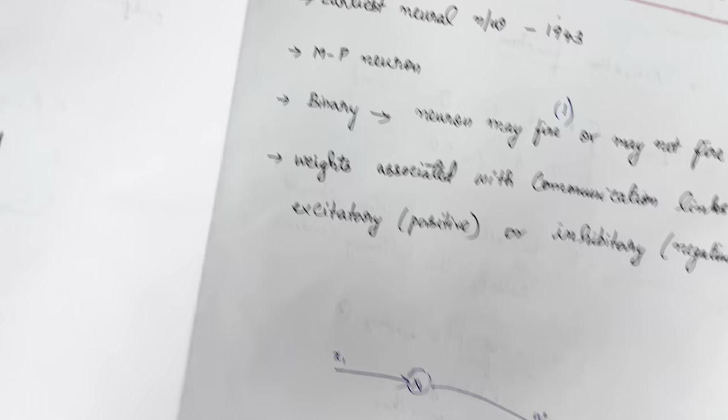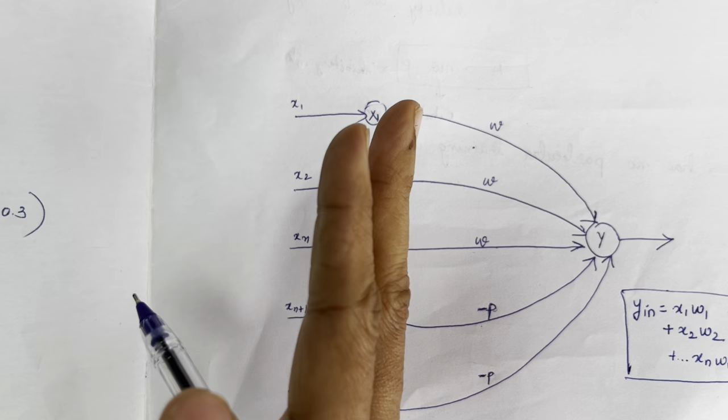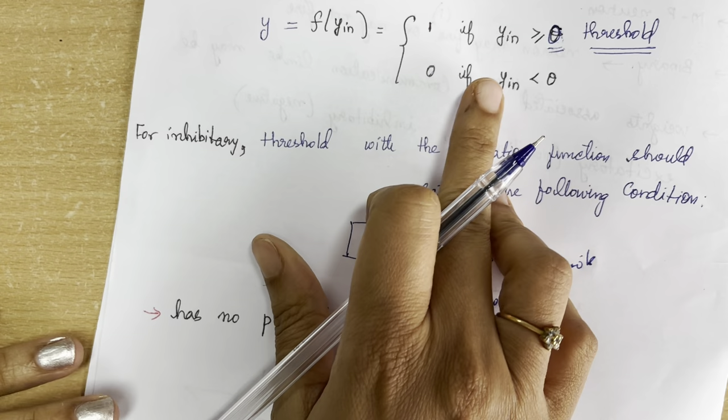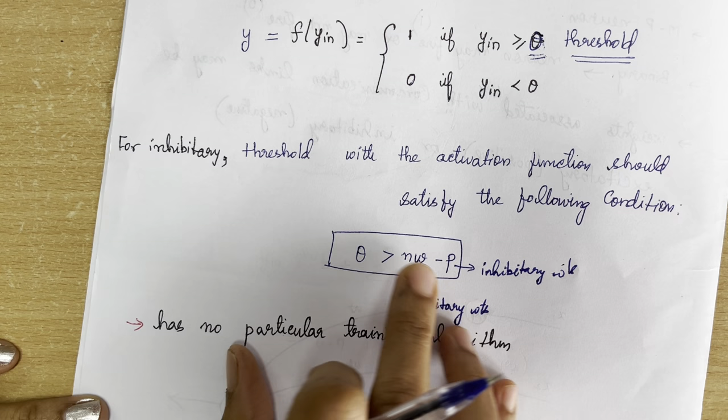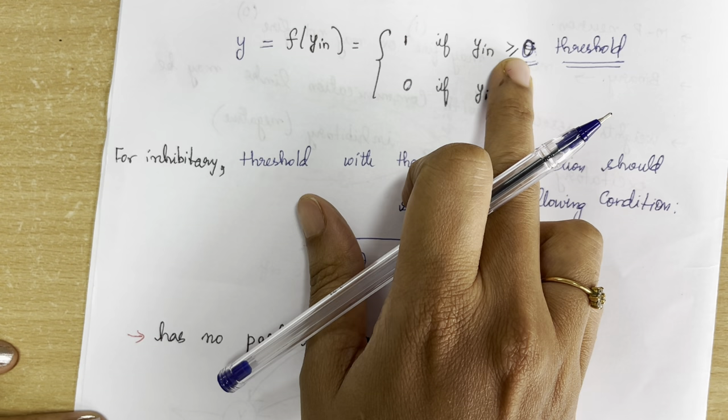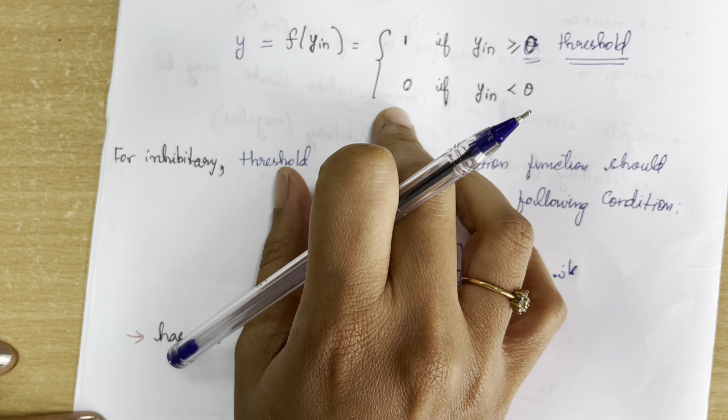The working model of the McCulloch-Pitts neuron operates as follows: first, multiply the inputs by their weights to find the y_input value. Then use the formula n·w minus p to find the threshold. Finally, check whether y_input is greater than or equal to the threshold — if so, the neuron fires; otherwise it does not fire.